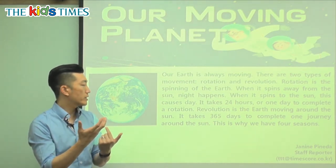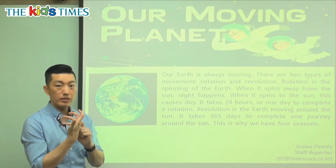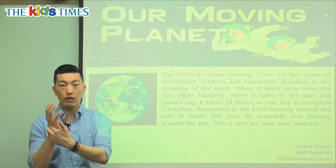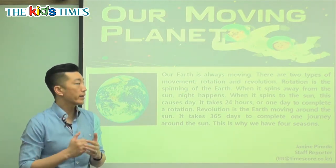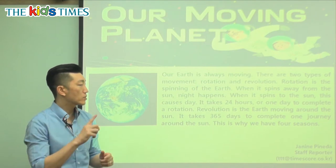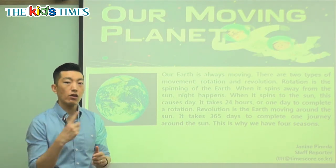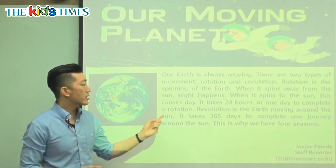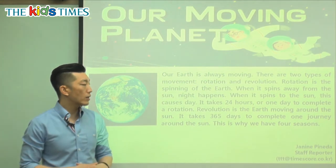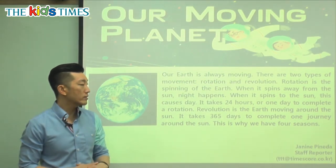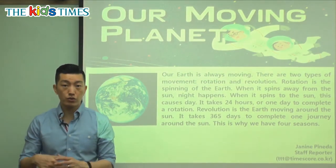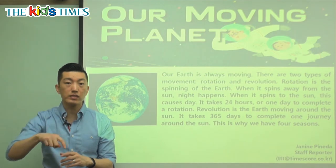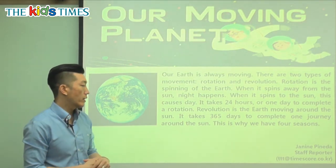And when it spins away from the Sun — let's say Korea is over here and it's spinning away from the Sun — then that's when the night happens. So as the Earth spins, it causes day and night. It takes 24 hours or one day to complete a rotation. So one full spin around takes 24 hours or one day.